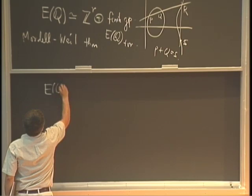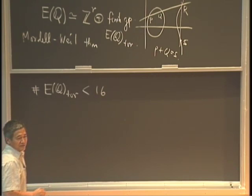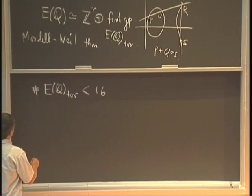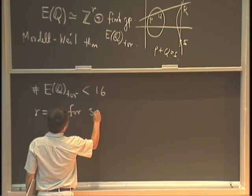The result over the rational numbers is actually completely due to Mordell. The torsion part E(Q)_tors is not very big — by a theorem of Mazur, it has at most 16 elements. As for the rank r, we don't know how large it can be, but there is a conjecture that r equals 0 for 50% of curves and r equals 1 for another 50%.